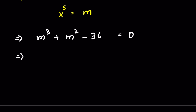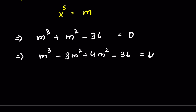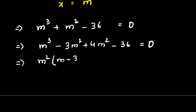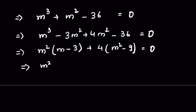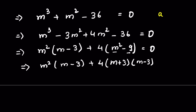Sending 36 to the left-hand side: m cubed plus m squared minus 36 equals 0. We rewrite this as m cubed minus 3m squared plus 4m squared minus 36 equals 0. Taking m squared common gives m squared times (m minus 3) plus 4m squared minus 36 equals 0. Since 36 is 4 times 9, we write 4m squared minus 36 as 4(m squared minus 9), which is in the form a squared minus b squared, giving (m plus 3)(m minus 3).